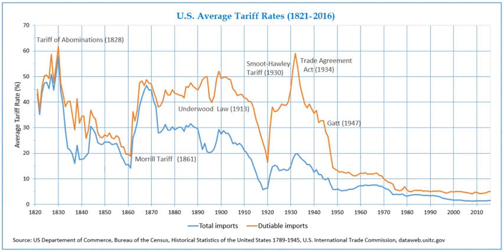Milton Friedman held the opinion that the Smoot-Hawley Tariff of 1930 did not cause the Great Depression; instead he blamed the lack of sufficient action on the part of the Federal Reserve. Douglas A. Irwin wrote: 'Most economists, both liberal and conservative, doubt that Smoot-Hawley played much of a role in the subsequent contraction.'